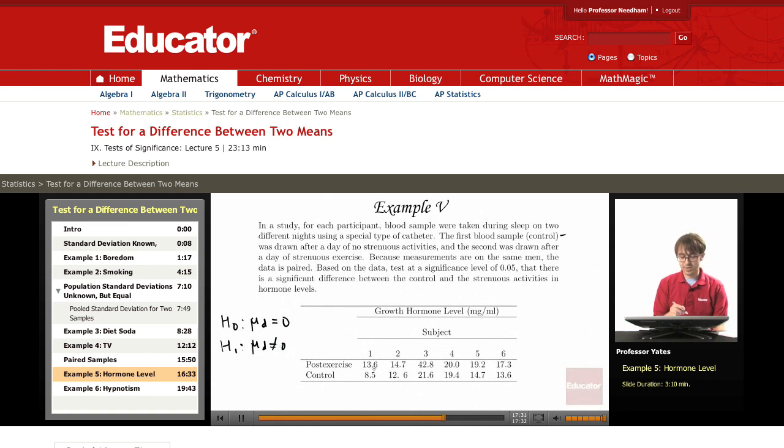Let's calculate our differences. The way this is set up, we can take 13.6. My first difference is going to be 5.1. I have 2.1 here, I have 21.2 here, I have 0.6 here. 19.2 minus 14.7 gives me 4.5 here, and I have 3.7 here.